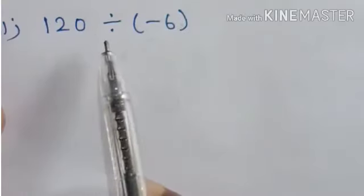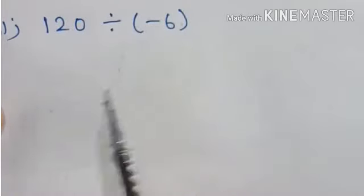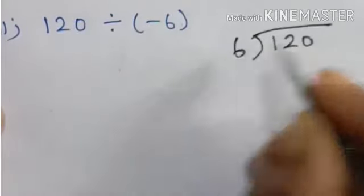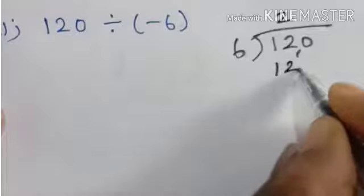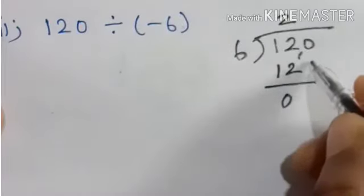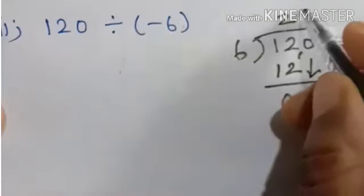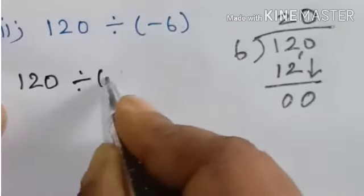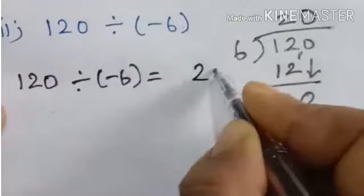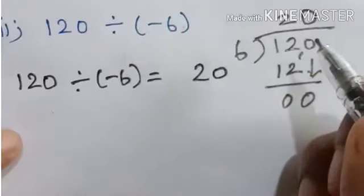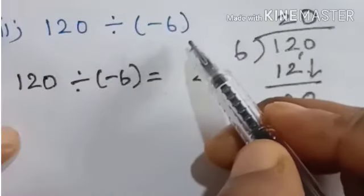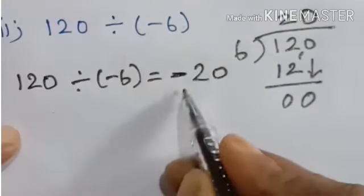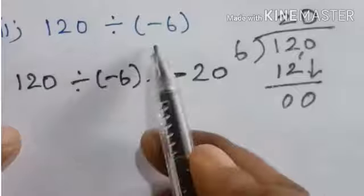Next problem: 120 divided by minus 6. First we divide 120 by 6: 6 twos are 12, 12 minus 12 is 0, giving us 20. Since division of two integers with different signs gives a negative integer, the answer is minus 20.